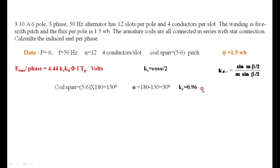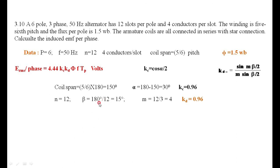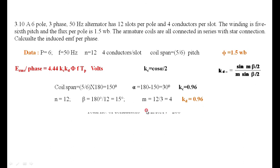The number of slots per pole n is 12. The slot angle beta = 180/12 = 15 degrees. The number of slots per pole per phase m = 12/3 = 4. Substituting m and beta into the Kd formula gives Kd = 0.96.